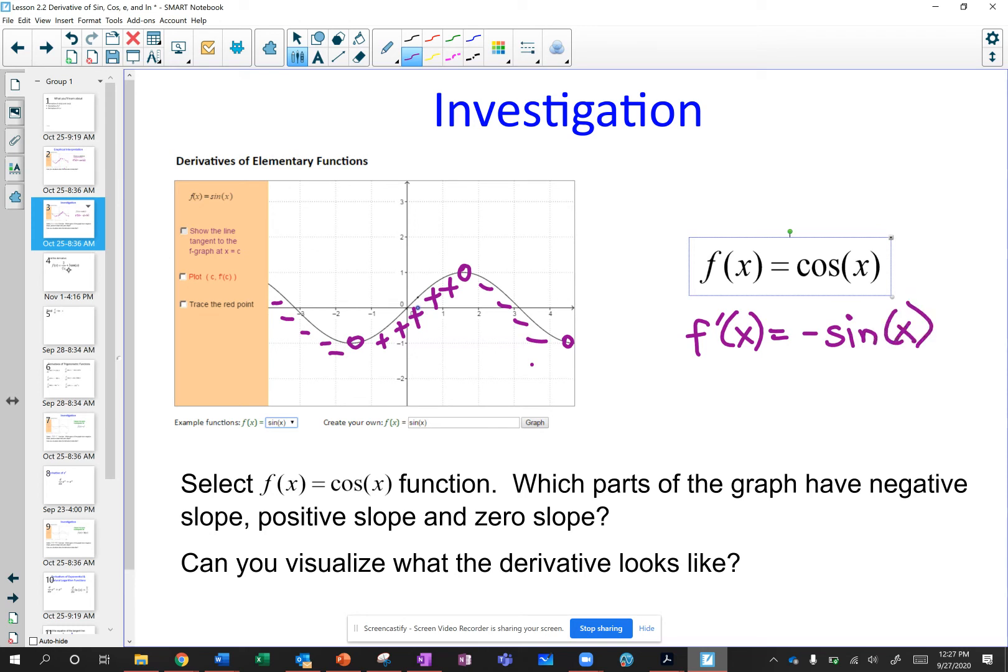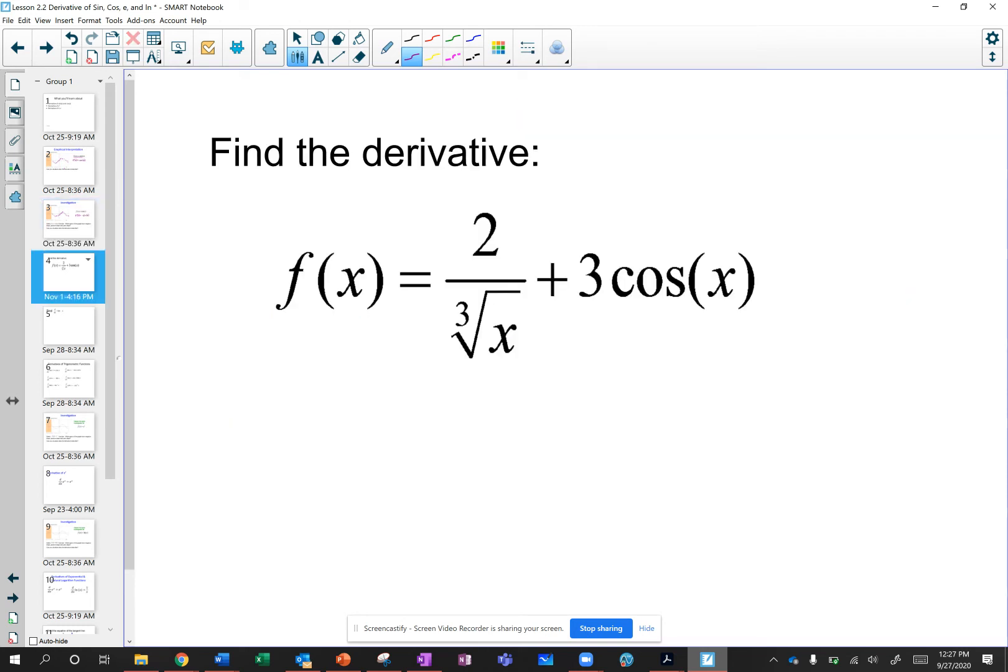So then let's do an example. If I have to find the derivative of this function, I'll first rewrite it as a power. So 2x to the negative 1 third plus 3 cosine of x. And actually, to make this more proper, this is f of x, not the derivative of x. I'm going to find the derivative. So I just rewrote the original function as a power function. Now I'm going to take the derivative.